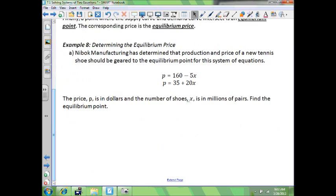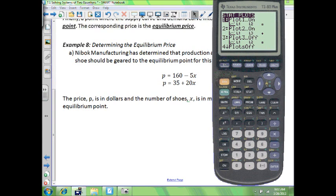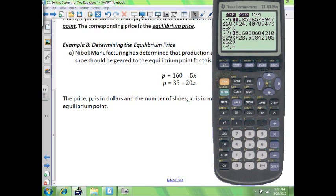We're going to put this into our equation. First, let's turn off our scatterplots by going up to plot 1 on Y equals and pressing enter, going to plot 2, pressing enter. You want to make sure those are unhighlighted. Clear out your two equations. Put your first one in.